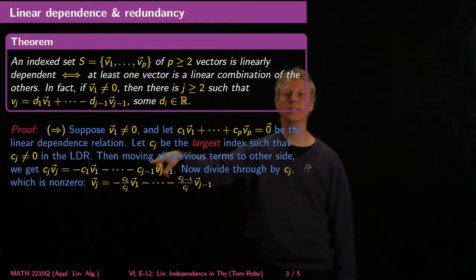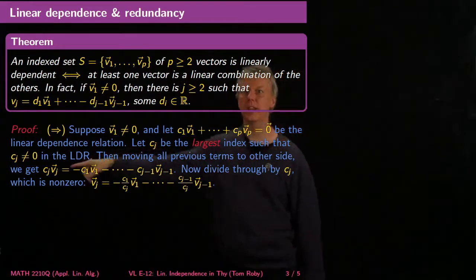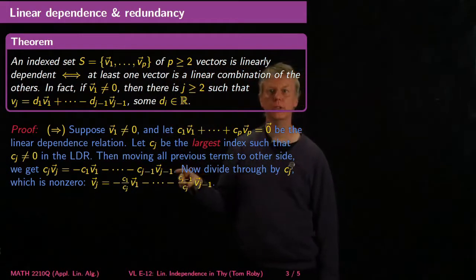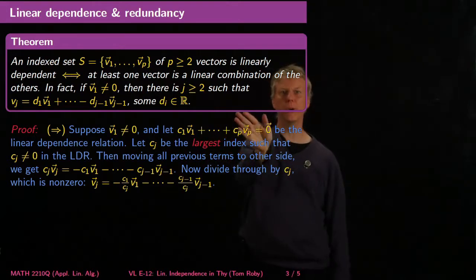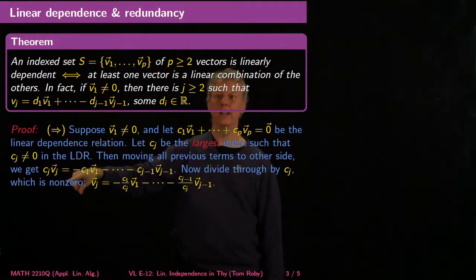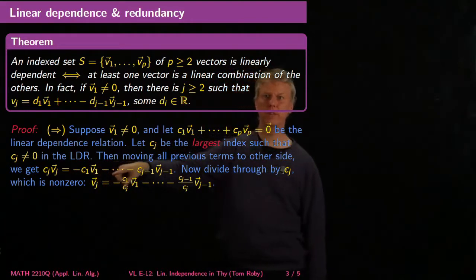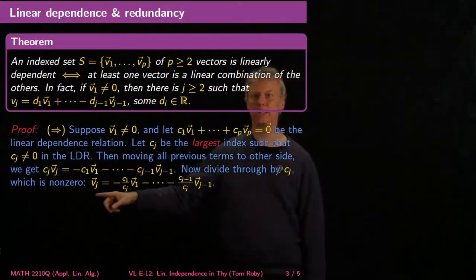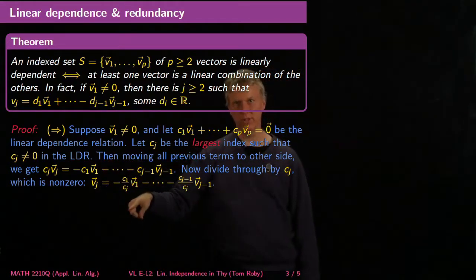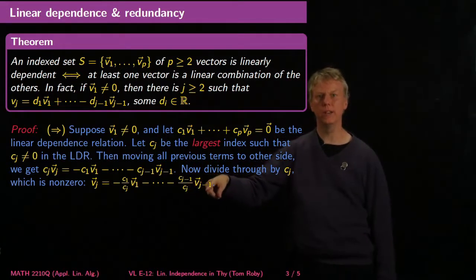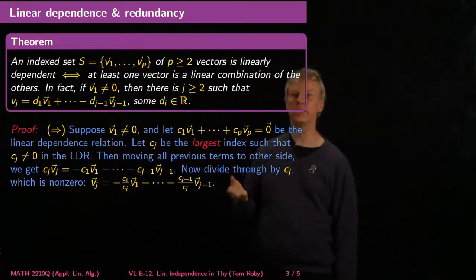So j is the largest index such that c_j ≠ 0 in the linear dependence relation. If I move all the previous terms over, the part that's c_{j+1} and above vanishes because they were all zero. So I'm left with c_j·v_j written in terms of all the ones before it: negative c1·v1 minus ··· minus c_{j-1}·v_{j-1}. Now if I divide through by c_j — which I can do since c_j ≠ 0 — I get that v_j equals a linear combination of the previous vectors. Done.